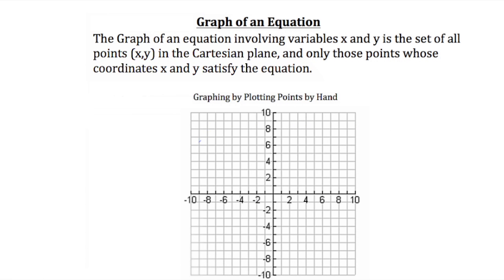The final important concept covered in this tutorial regards graphing an equation. The graph of an equation involving variables x and y is a set of all points (x, y) in the Cartesian plane, and only those points whose coordinates x and y satisfy the equation. We can easily graph an equation by plotting points by hand on the graph.